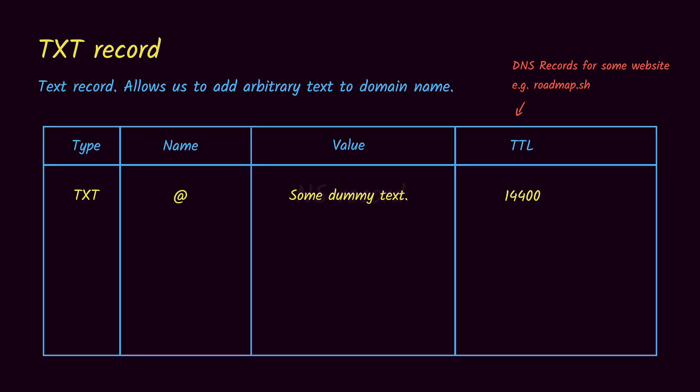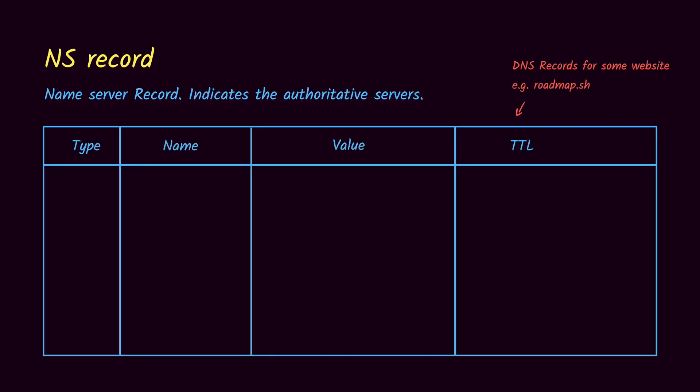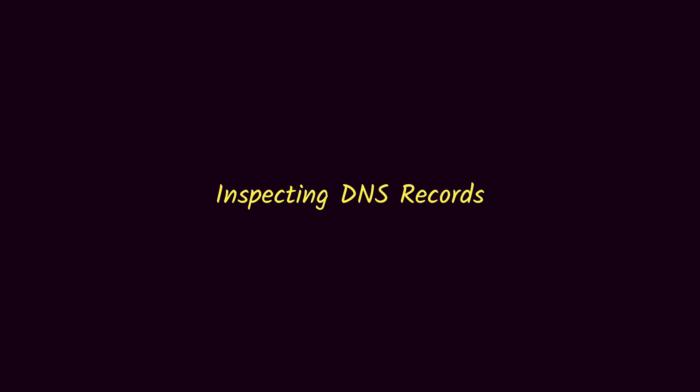The last one is the NS record, or name server record, which gives you the location of the authoritative name servers — the place where the domain information is located. For example, here are sample NS records for a domain: ns1.example.com and ns2.example.com. There are several other types of DNS records as well, but these are the ones most commonly used.